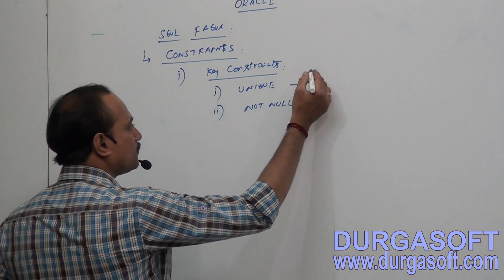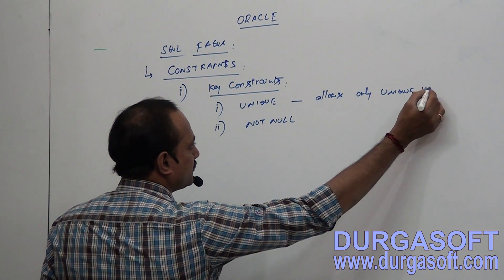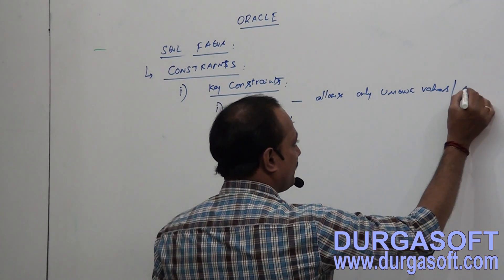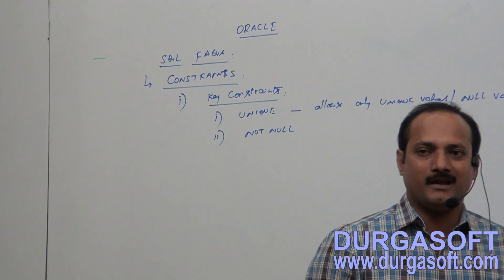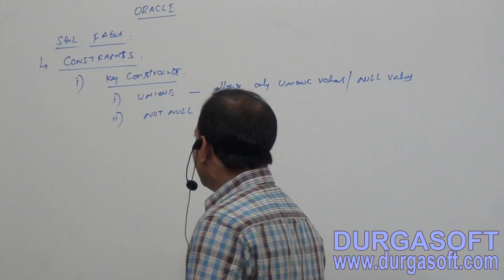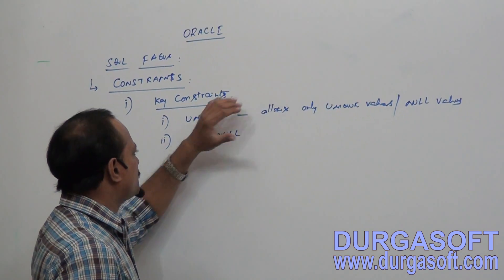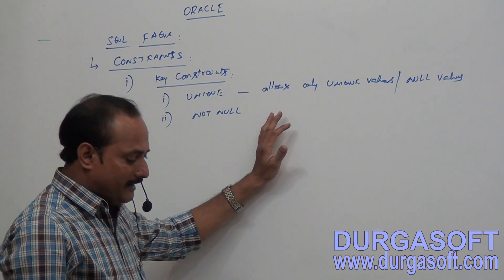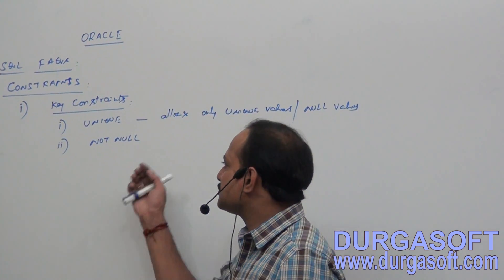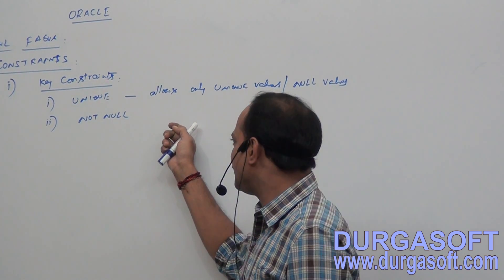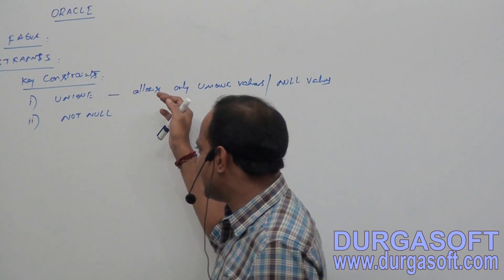What is unique? It allows only unique values. But it can also allow null values. Remember this point — it also allows null values. What is a null value? In SQL, every null value is considered as a unique value; one null value is not equal to another null value. Unique can be helpful for maintaining email IDs, mobile numbers, and policy numbers. People who are not having a mail ID or mobile number just leave the entry as null.